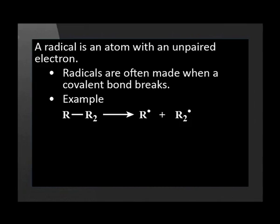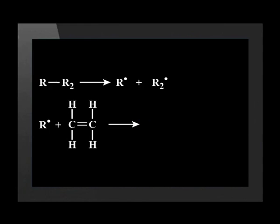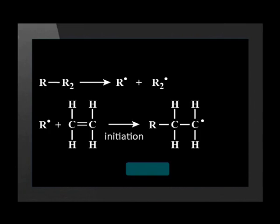We represent the unpaired electron with a dot. R, in this diagram, represents an atom or molecule. Radicals are chemicals that readily form new bonds. So they form a bond with the monomer, and this breaks the double bond. They also make a new radical. This process is called initiation.